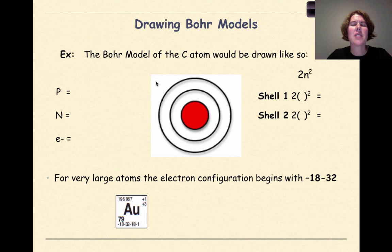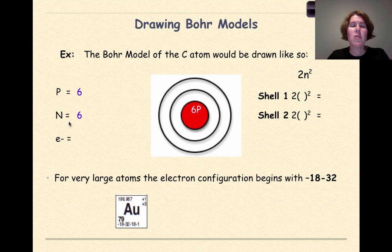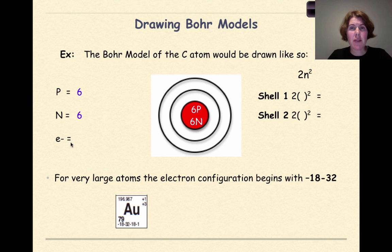The next thing we have to look at is how to draw Bohr models. The example we're going to use is the carbon atom. In a carbon atom, the number of protons is 6 because it has an atomic number of 6. Therefore in the nucleus, 6 protons. The number of neutrons is 6 because the atomic mass of carbon is 12, so 6 plus 6 gives me 12 atomic mass.